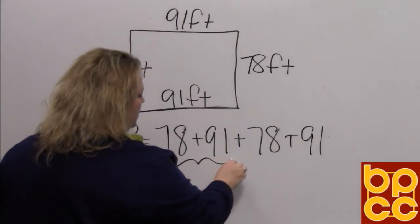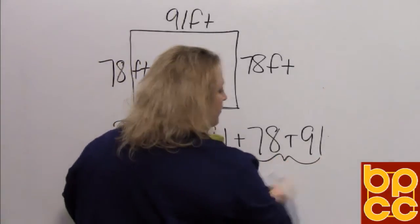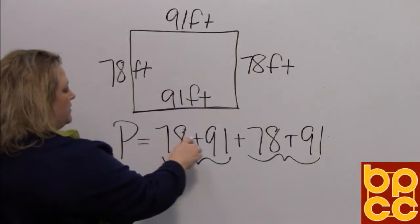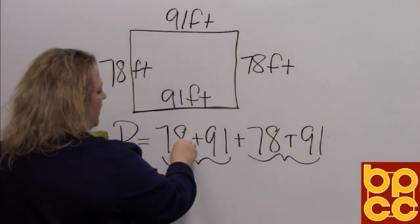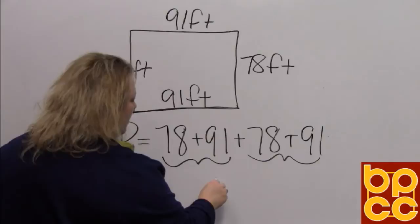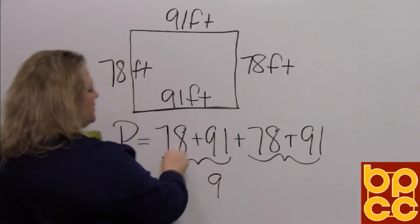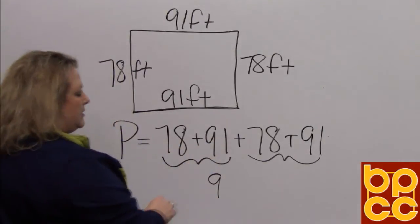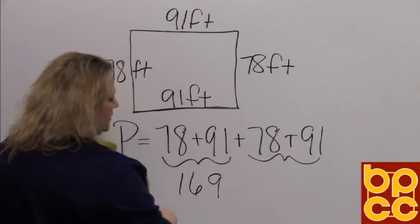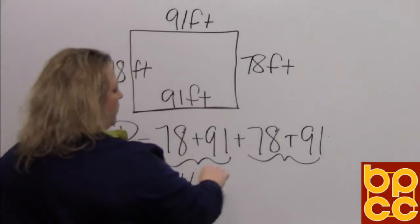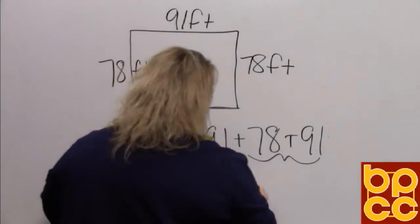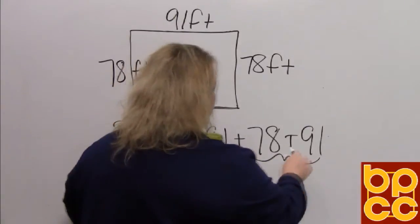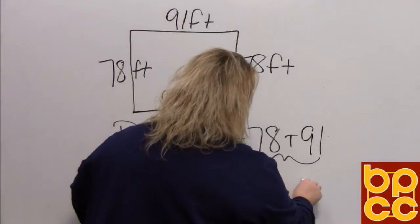You can add two numbers at a time. It would make it easier for you. So when you add 78 plus 91, 8 plus 1 is in the ones column. That gives you 9. 7 plus 9 is 16. So that's 169 there. And if you have 169 here and you're adding the same numbers together, you would also have 169 on this.